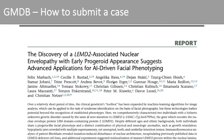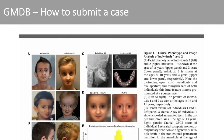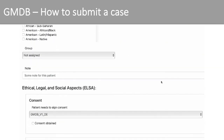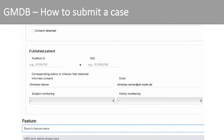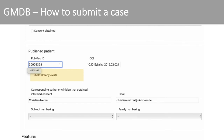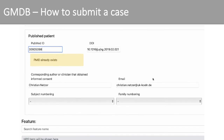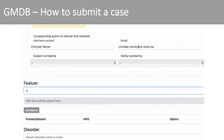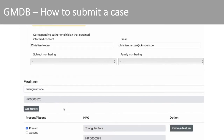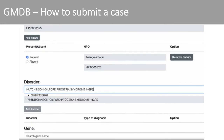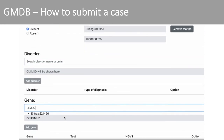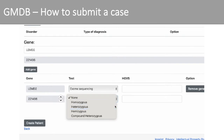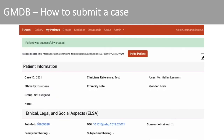Let's get back to our LEMD2 case. I will now show you how to upload this photo to GMDB. You first enter gender and ethnicity, and you can also take some notes. For published cases, you need to enter the PubMed ID or DOI and the corresponding author so we can ask for reuse. Subject and family numbering should be used for relatives. You can also add HPO terms and the disorder if it is known and already listed in OMIM.